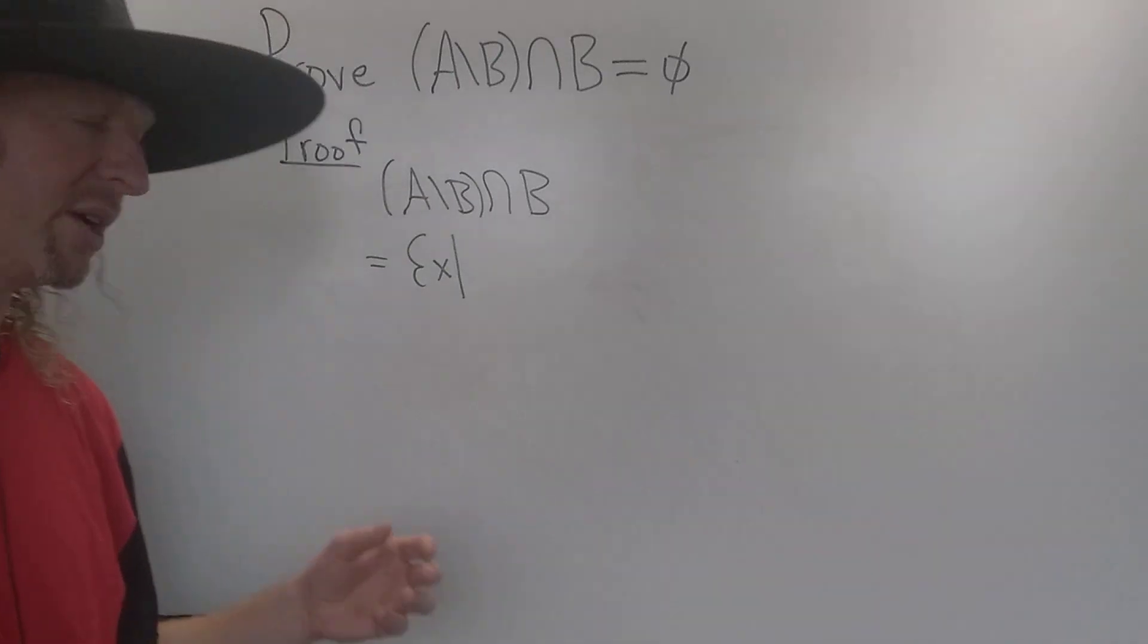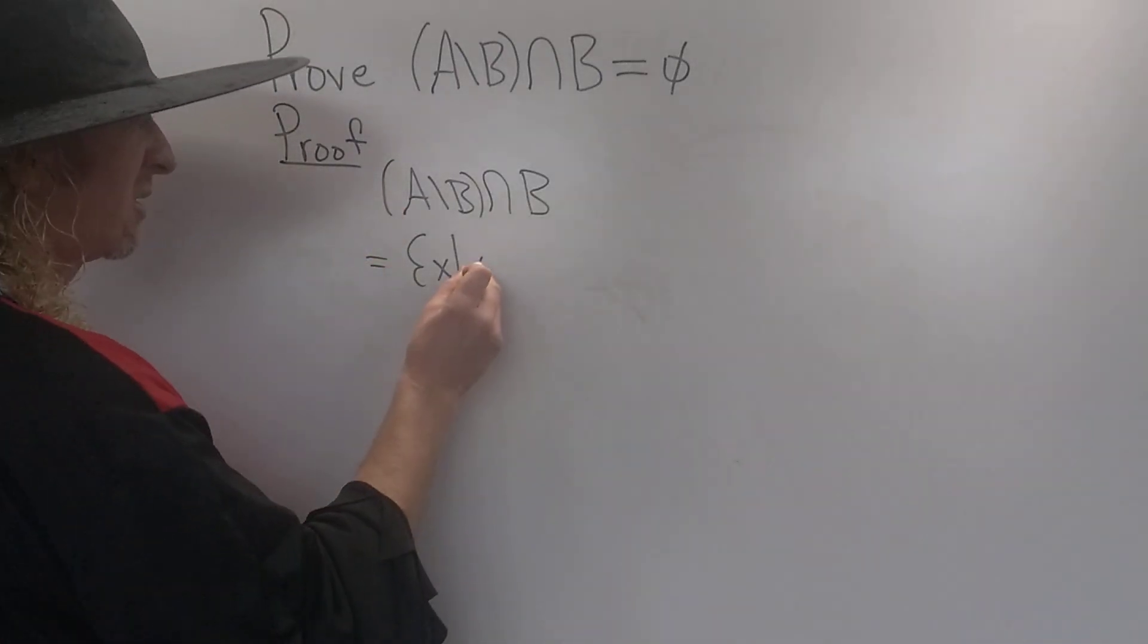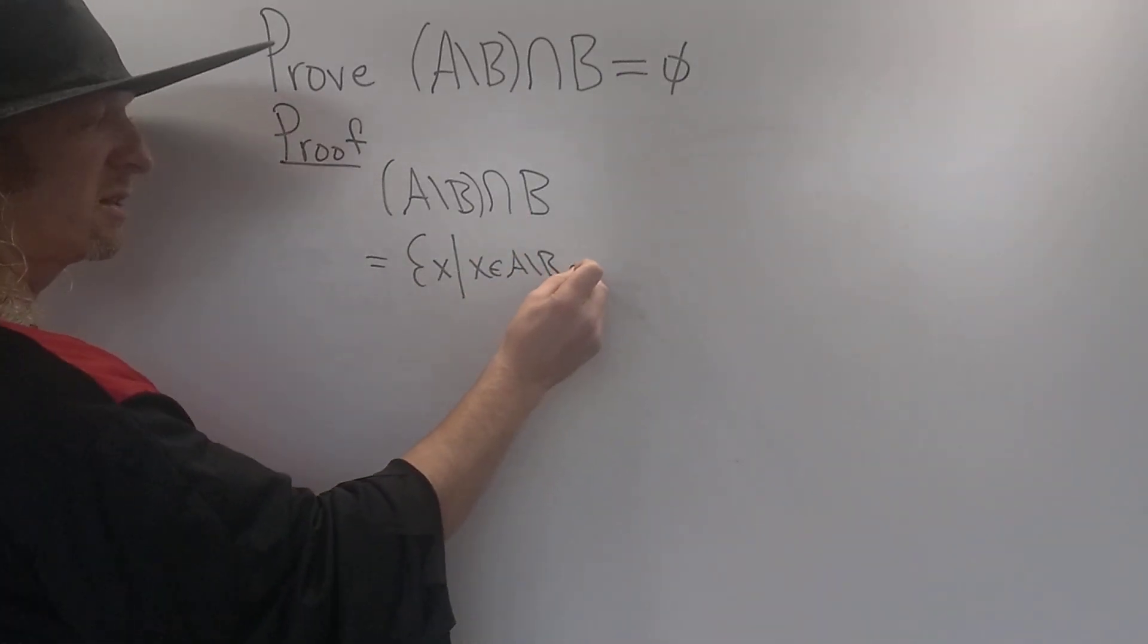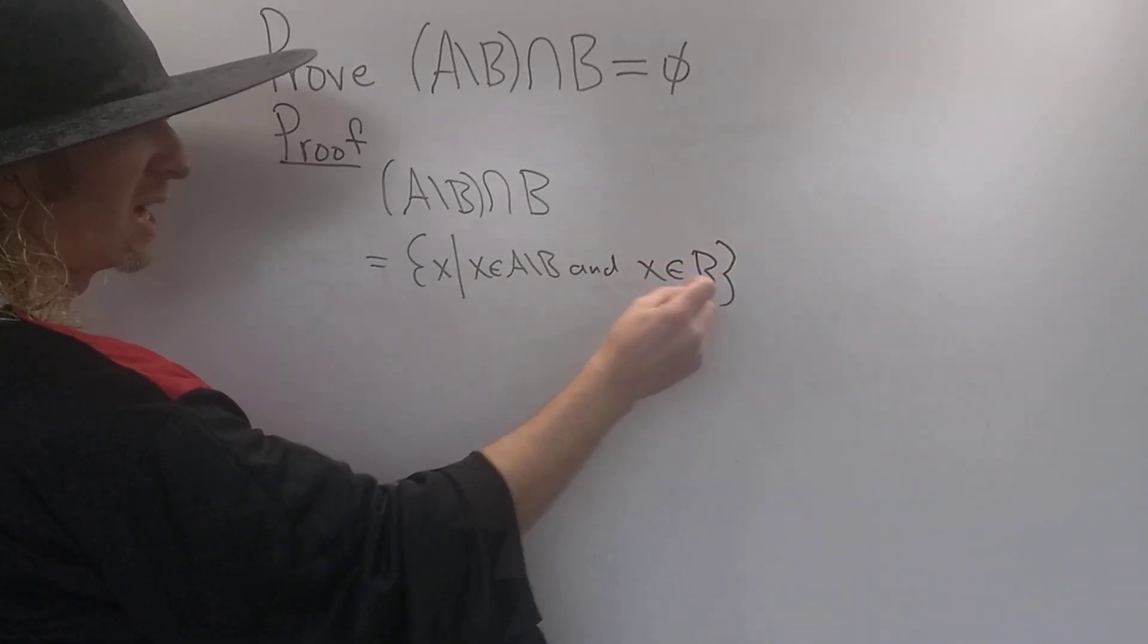Let's use the definition of intersection. If something's in the intersection, that means it's in both sets. So X is in A set minus B, and X is in B. It's in both sets.